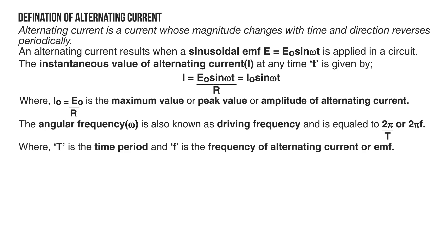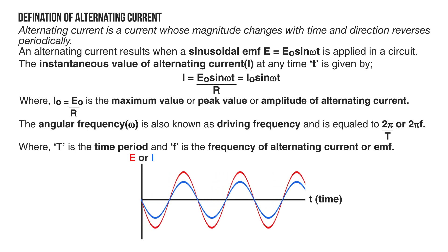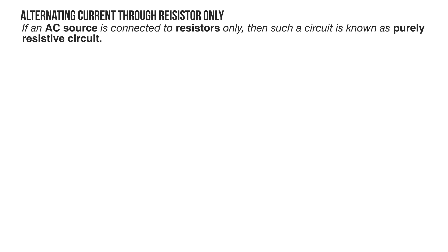The alternating current and emf can also be represented graphically, with the x-axis representing time and the y-axis representing the magnitude of instantaneous emf or current. Note that the value and nature of alternating current depends on elements like resistor, inductor, and capacitor in a circuit. Therefore, let's first find the nature of alternating current through a resistor only.